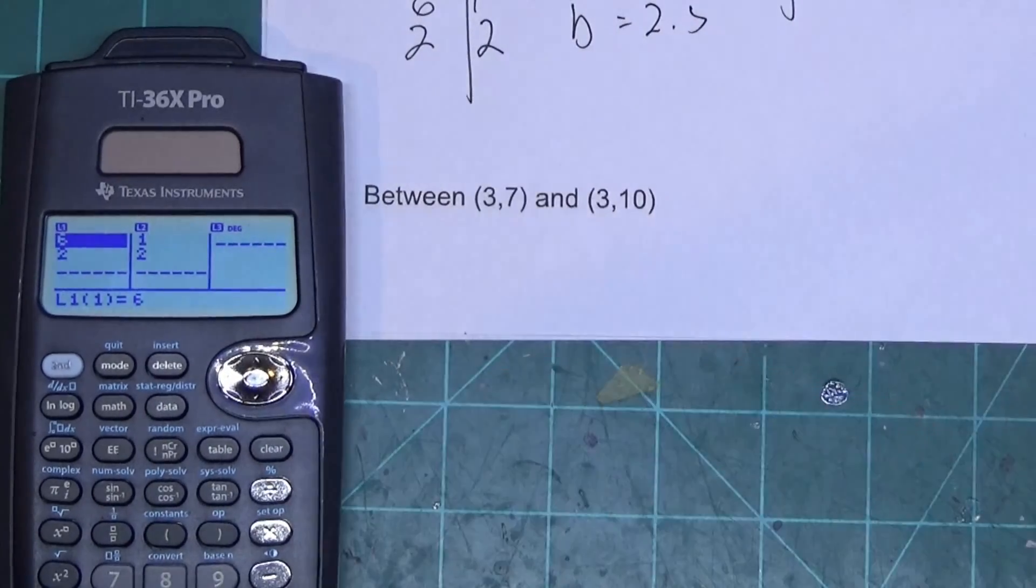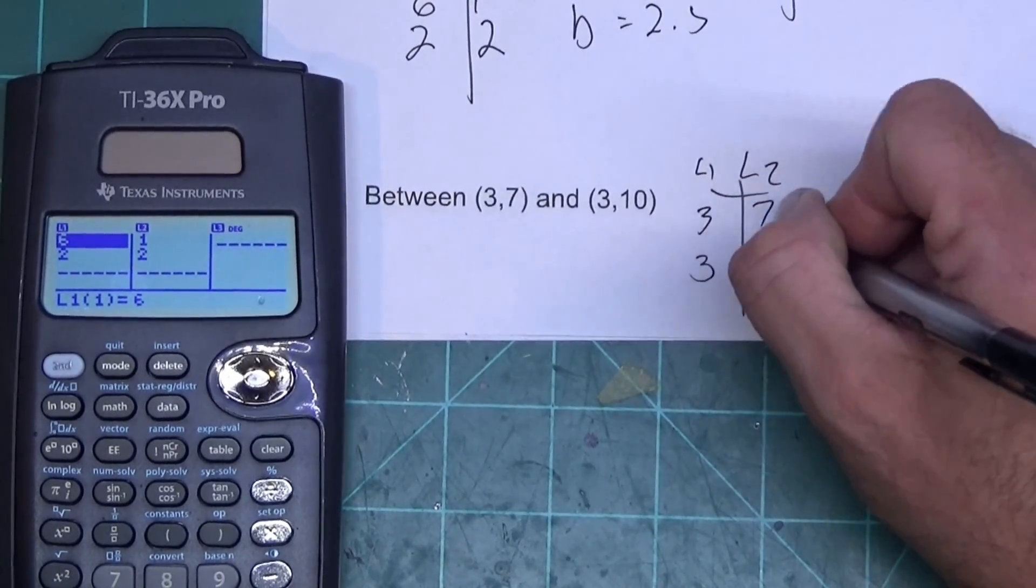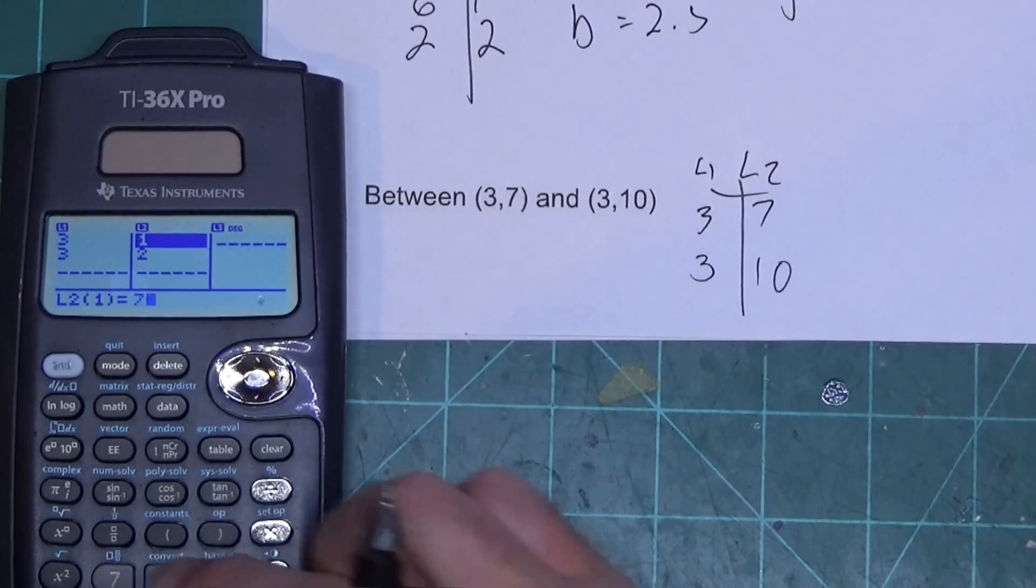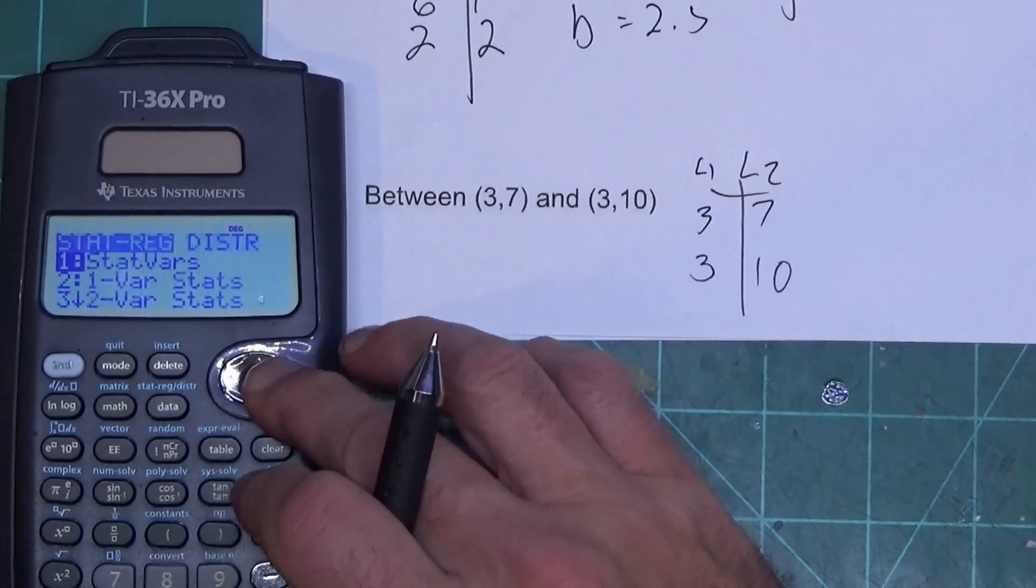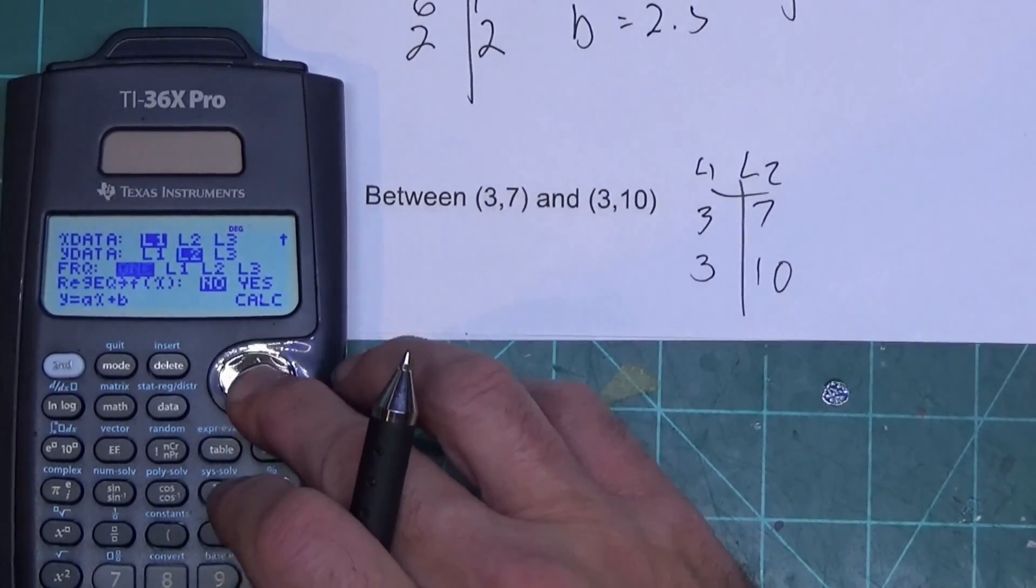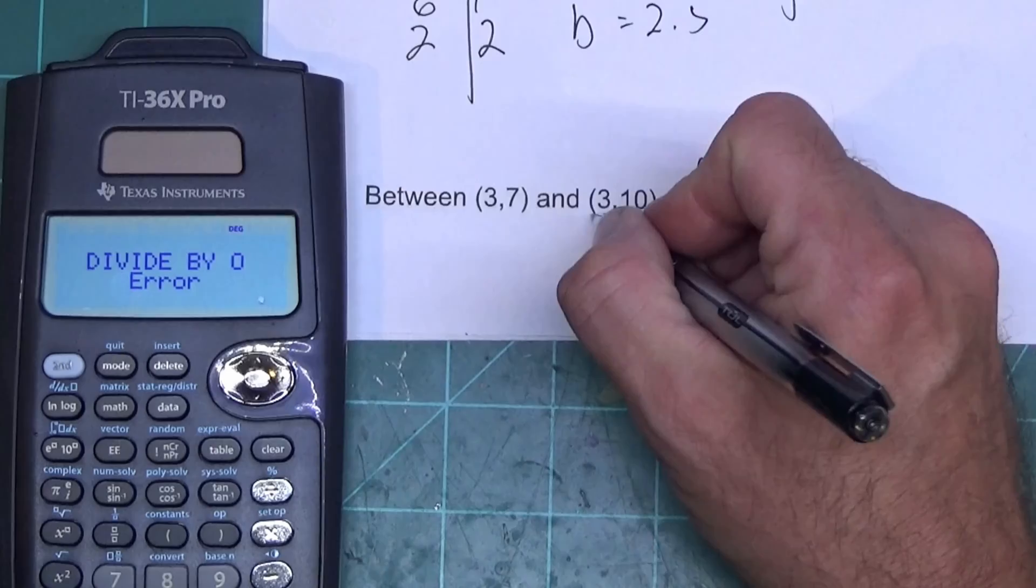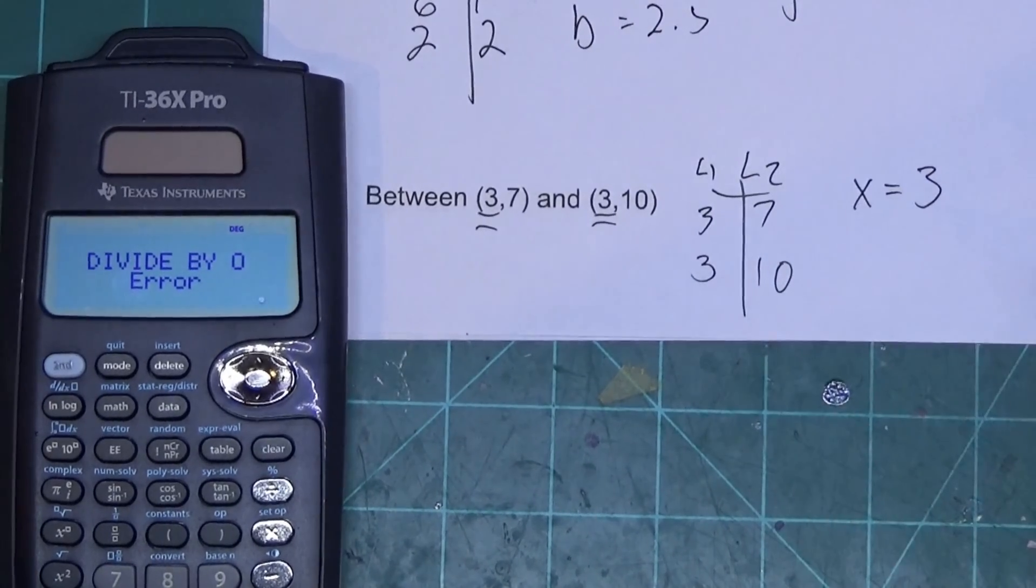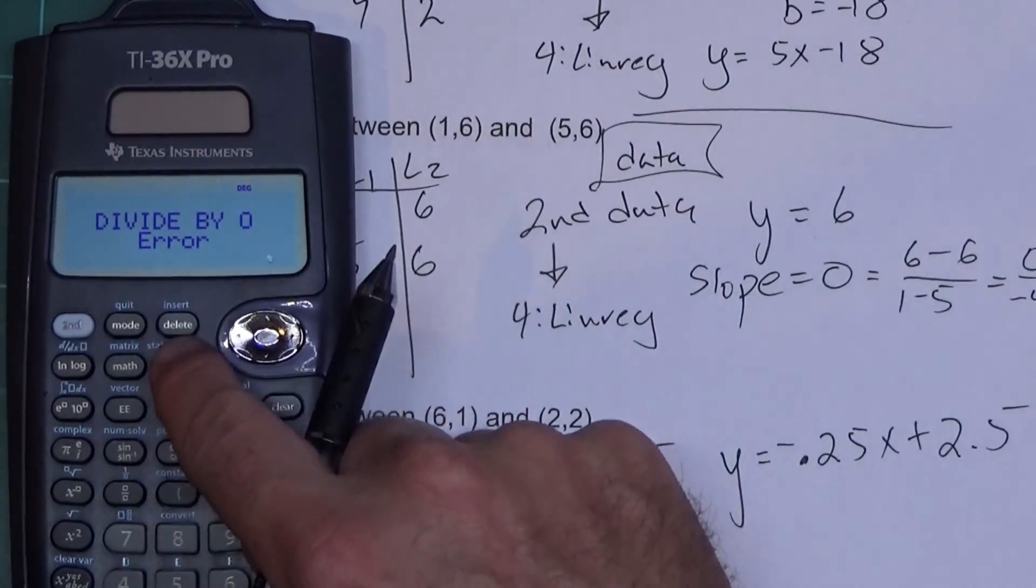Okay. So I'm going to press the data button. I'm just going to overwrite these this time. So when I do this one, L1 should be 3 and 3. L2 should be 7 and 10. So I'm going to type 3 enter, 3 enter. And you can just overwrite the numbers. 7 enter, 10 enter. Okay. Then I'm going to push second data over to, I mean, down to number 4 for Linray. Straight to calculate. I expected this this time because this is a vertical line. Notice the x values are the same. Vertical lines occur when you have the same x value in the two points. Equation should have been x equals 3 and the slope is undefined. Did not expect that with a horizontal line, which is weird.